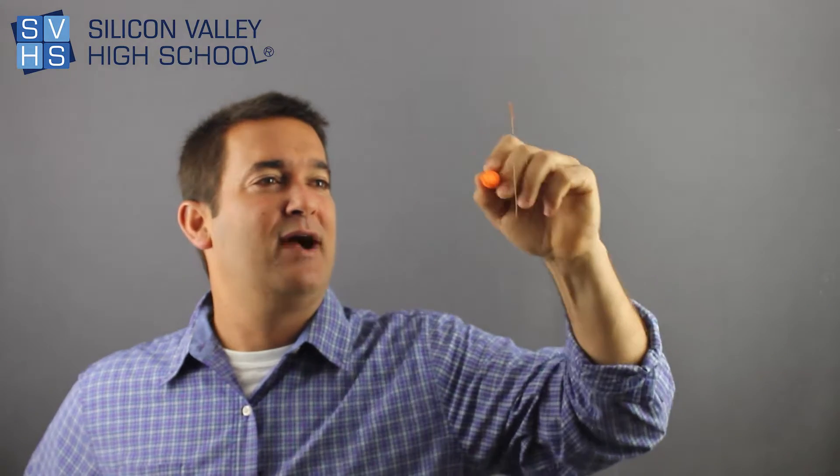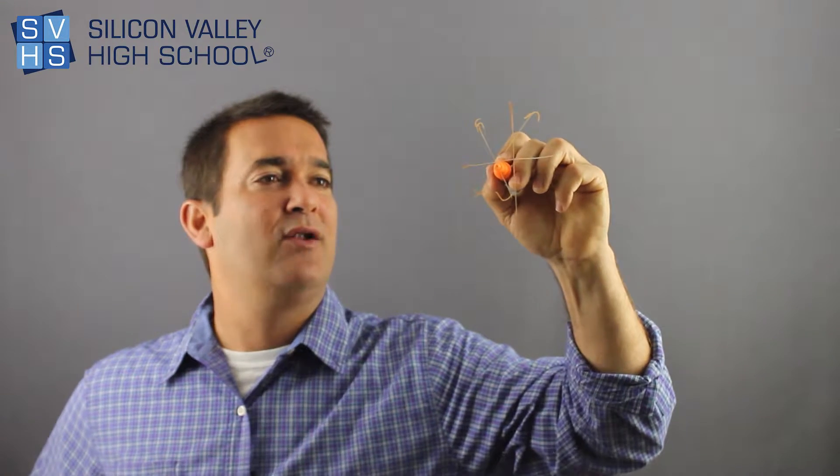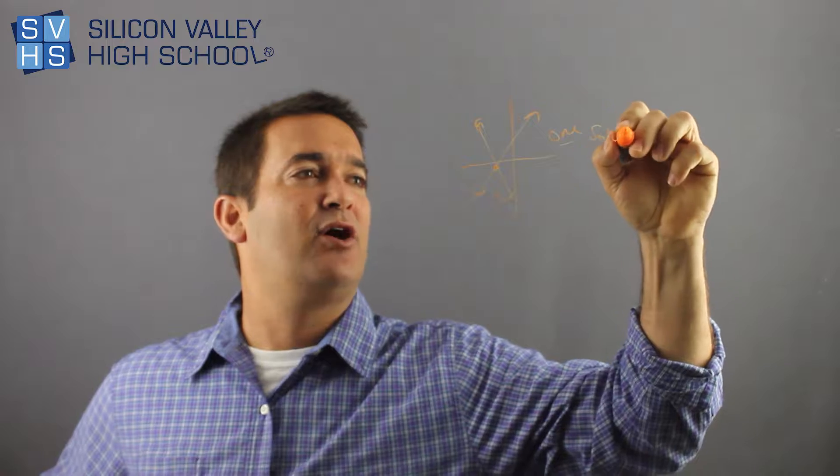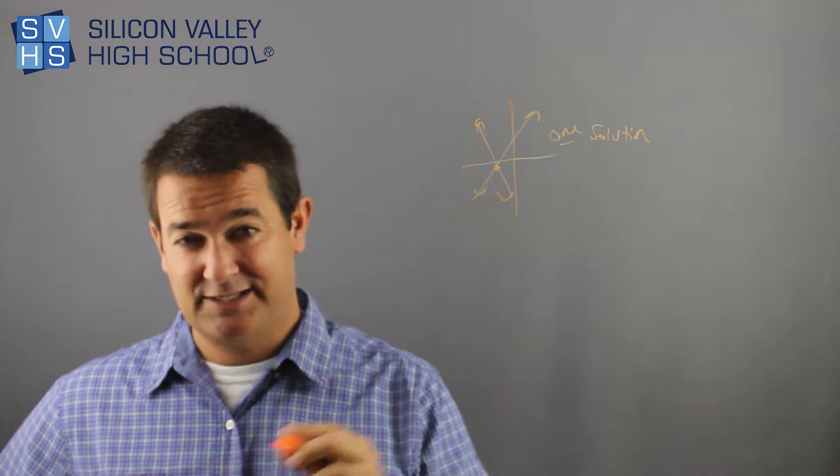The one thing that's weird about systems of equations is there's three possible outcomes. You could graph two lines, you could get one solution, which is very common. I did it, and I got the answer. So I have one solution, an x and a y.